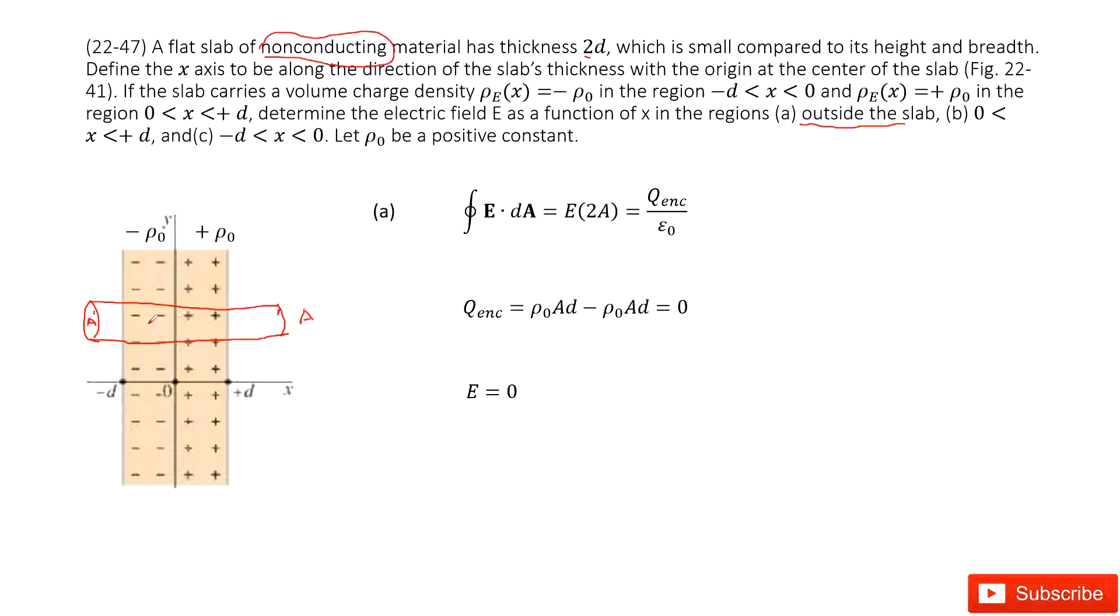In this case, we write down Gauss's law. We can see electric field times the Gaussian surface A and A, so 2A, equals enclosed charge divided by ε₀. Because the electric field is perpendicular outside to these slabs, the Gaussian surface is just 2A.